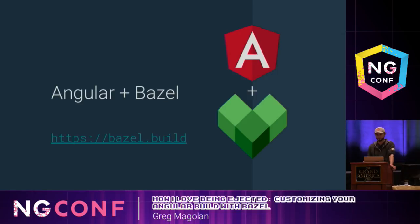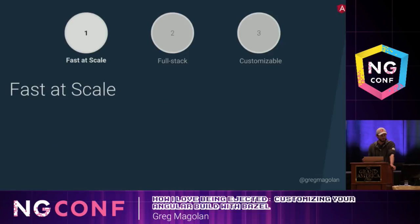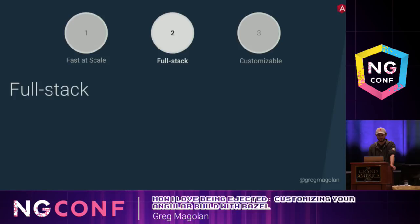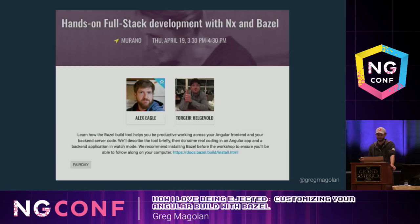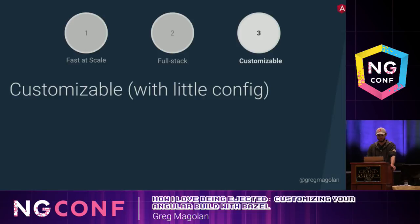So what are the benefits of using Bazel with Angular? First, Bazel is designed to be fast at scale — it can scale to large apps and large teams, and it remains fast with incremental builds and distributed builds. Second, Bazel is full-stack, so it can be used to build both your front-end and your back-end, and it also supports most languages that are out there. If you're interested more in the full-stack capabilities of Bazel, you can check out the video from Alex and Tor's workshop from earlier today. Finally, Bazel allows you to customize your build with very little configuration, which is what I'm talking about today.